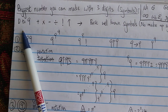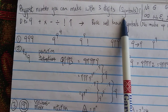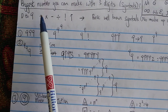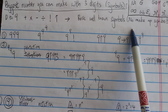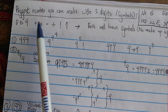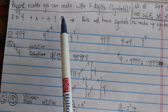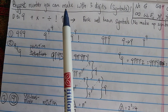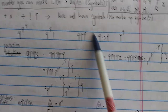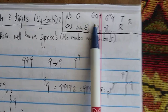The rules are: you can pick any number or symbol — of course you can pick from zero to nine — and then any basic, well-known symbols such as plus, minus, times, divide, or factorial sign, the up arrow or the chain arrow. Something like that. No made-up symbols. You cannot make up your own.